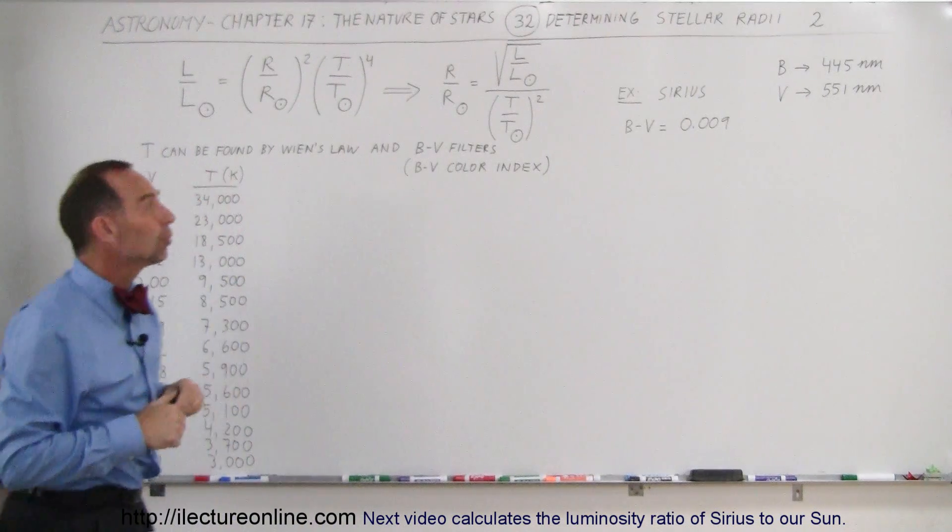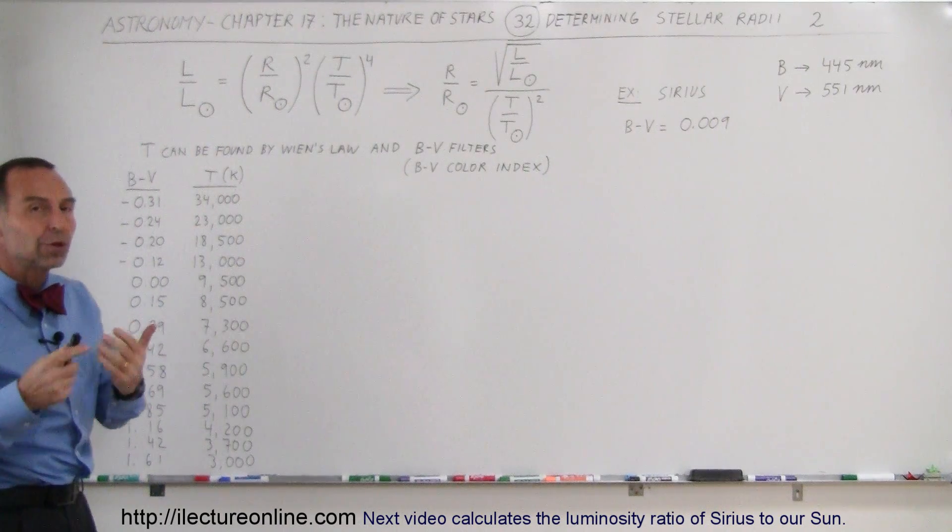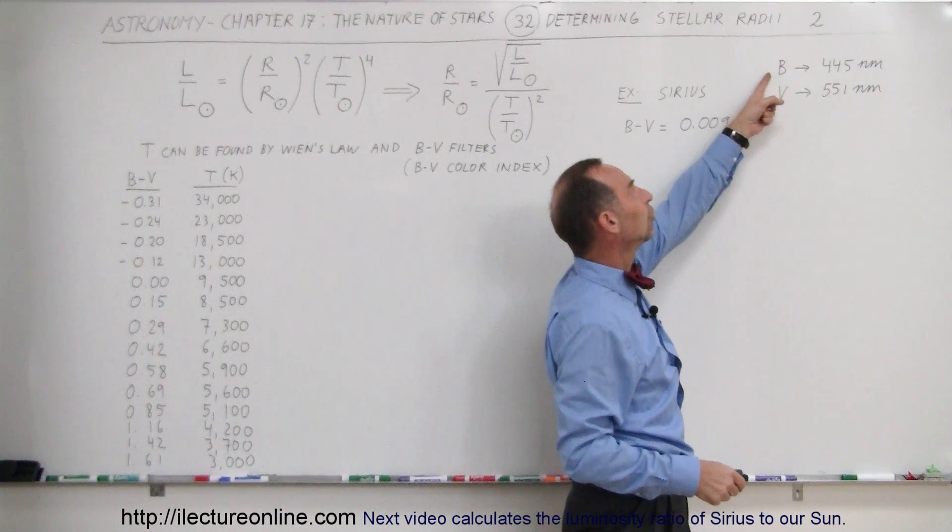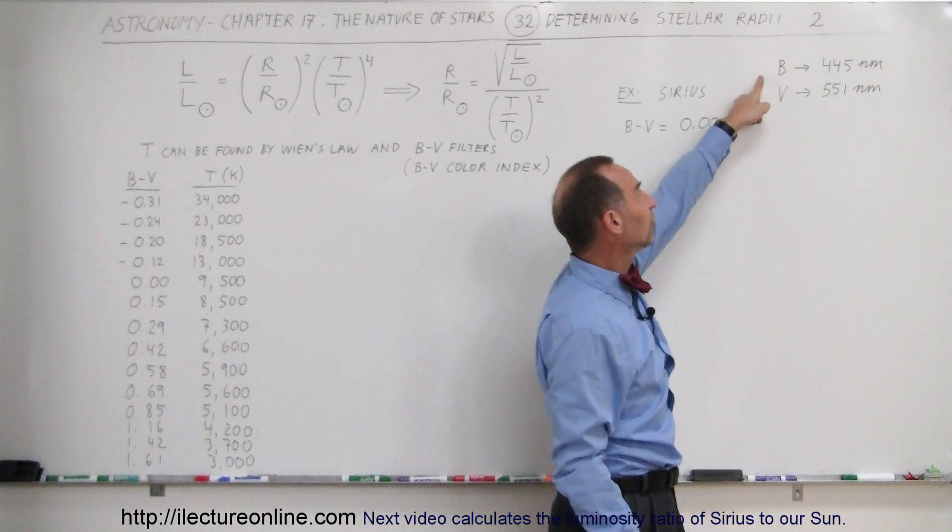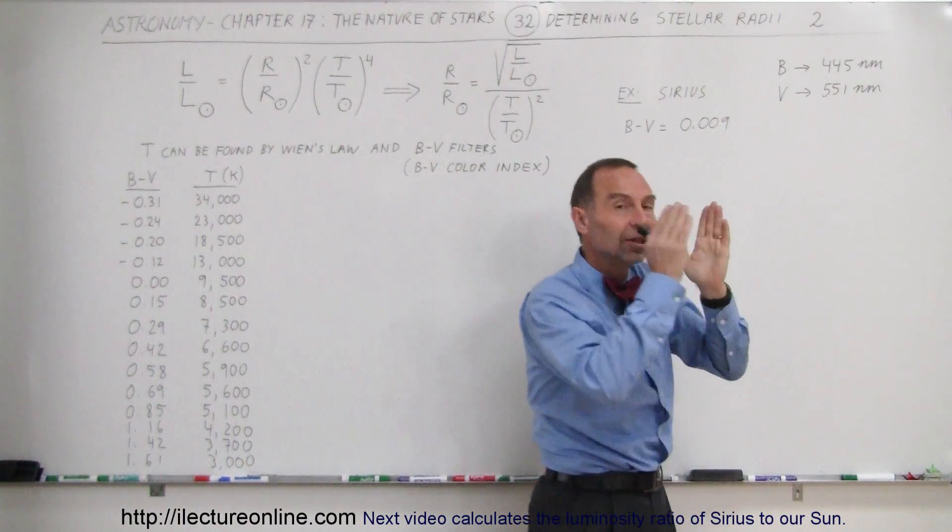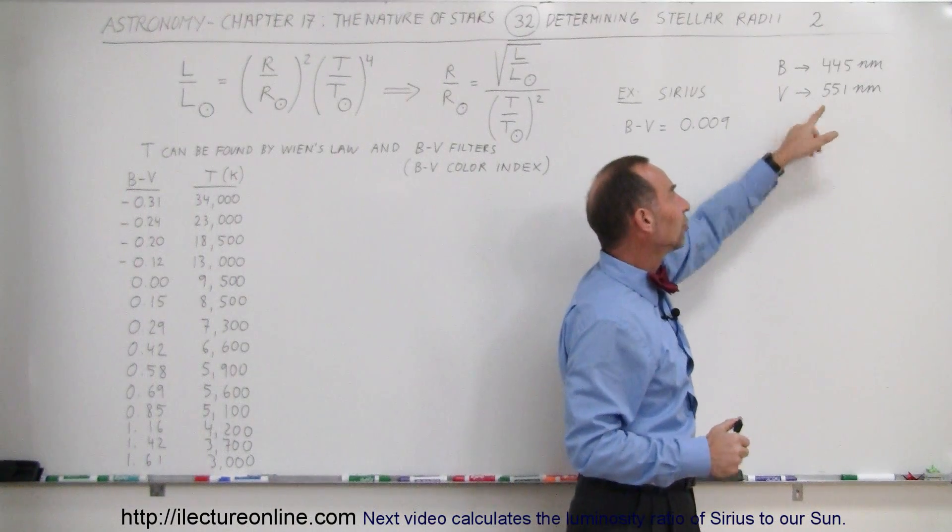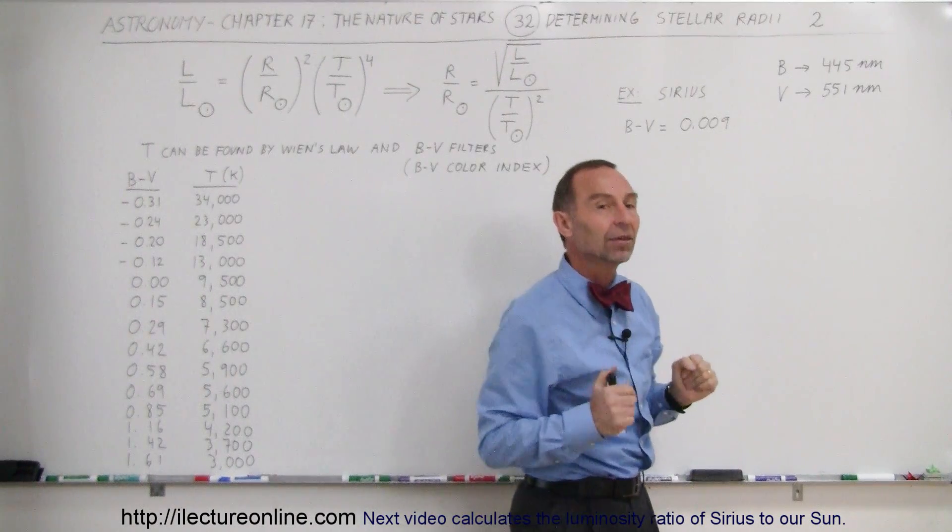The first thing we're going to do is determine the temperature of a star. We use what we call a filter system. Most often, we use the B and V filter: B for blue and V for visible light. A B filter lets through light at predominantly 445 nanometers and a narrow band around it, and the visible light filter lets through light at 551 nanometers and a narrow band around it.